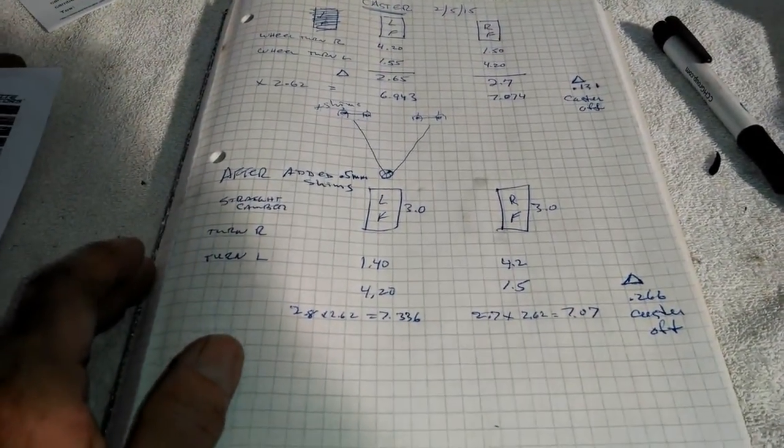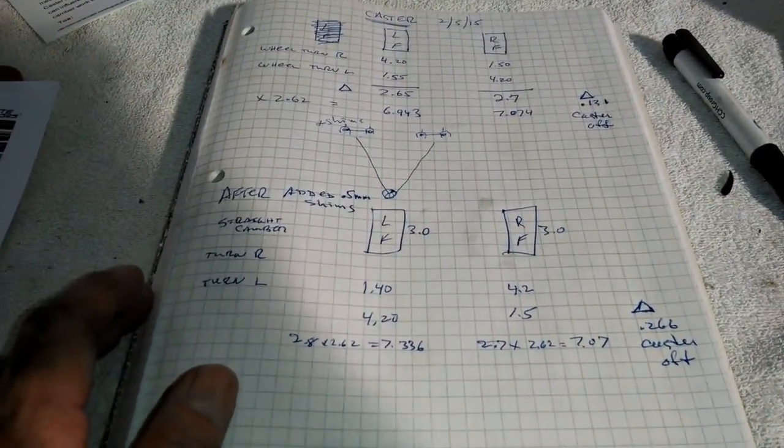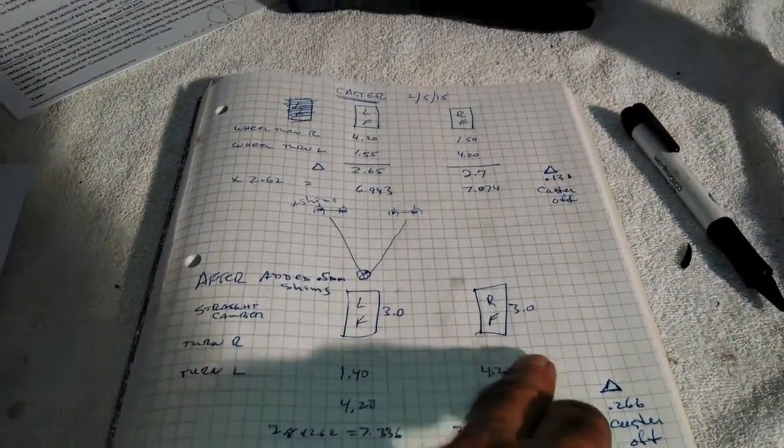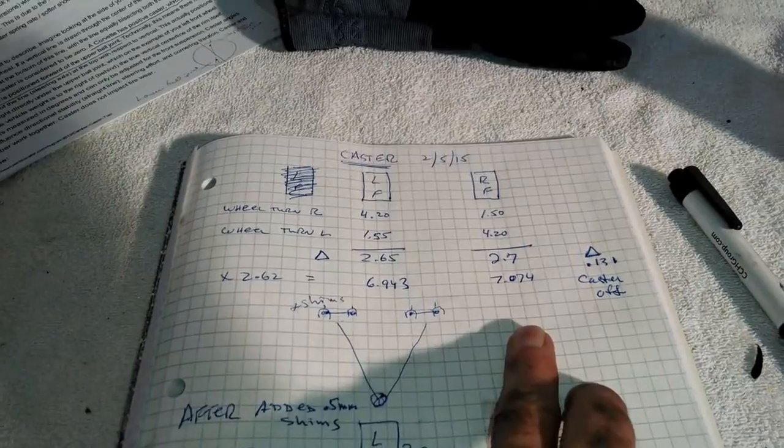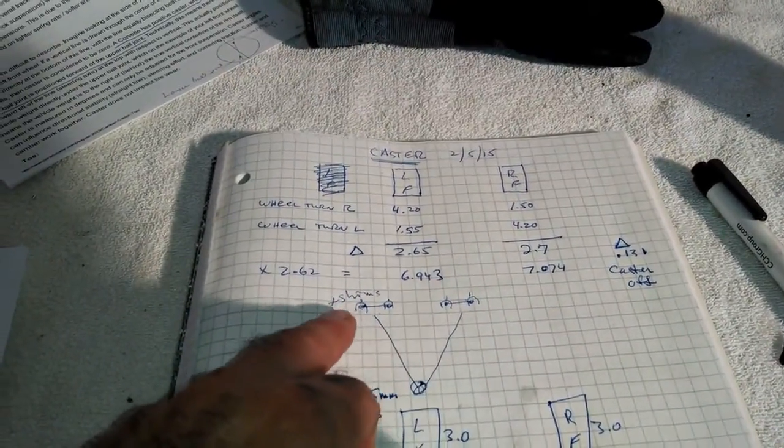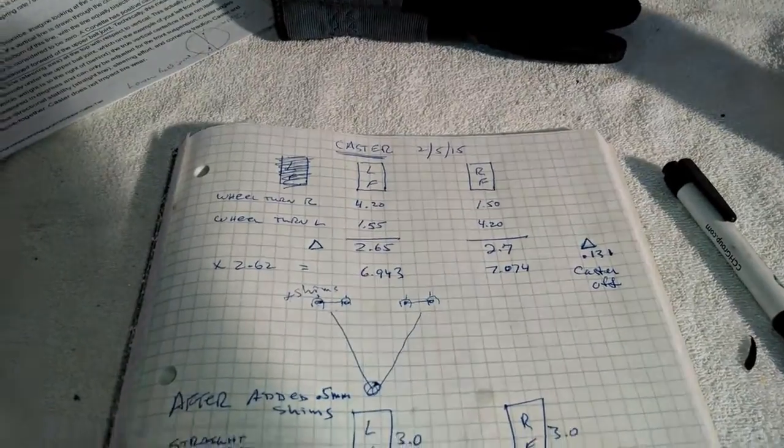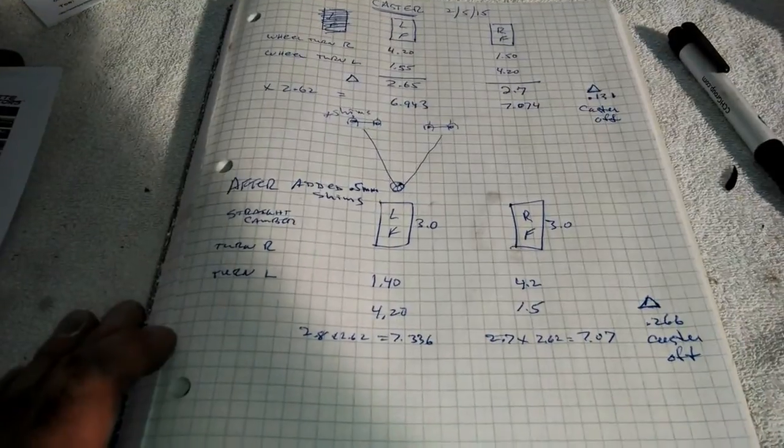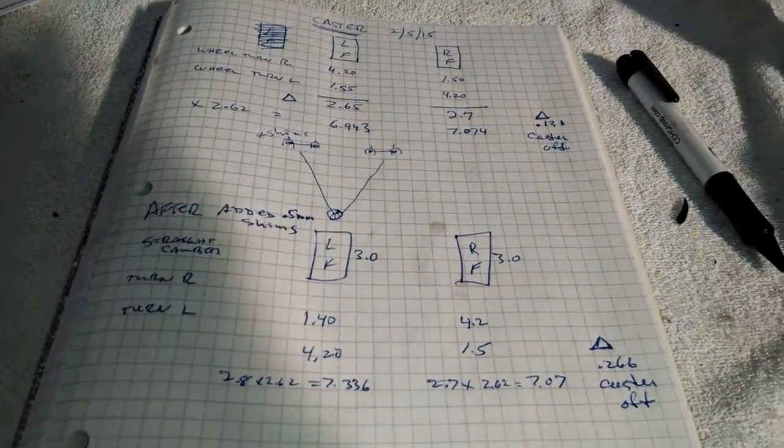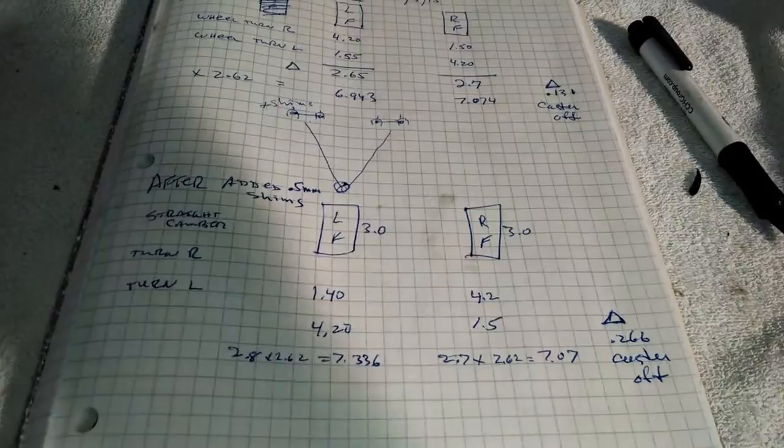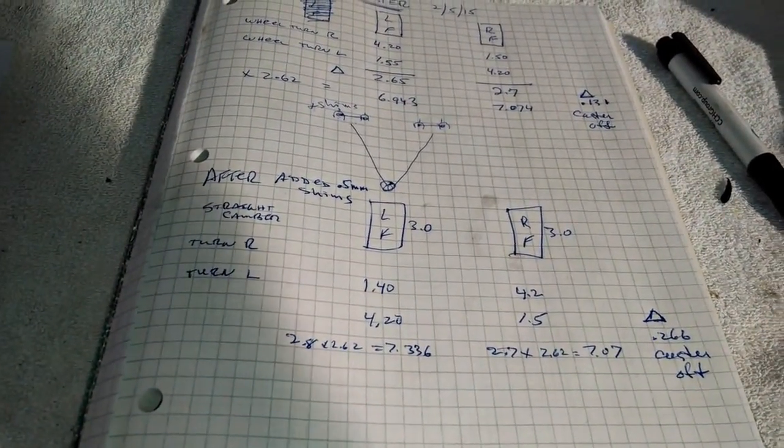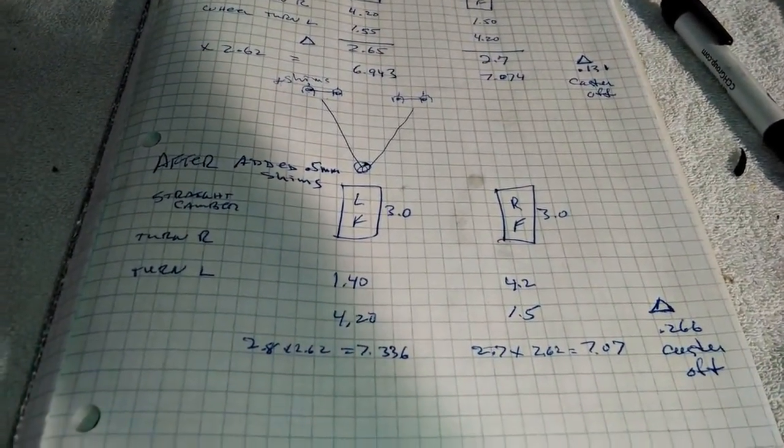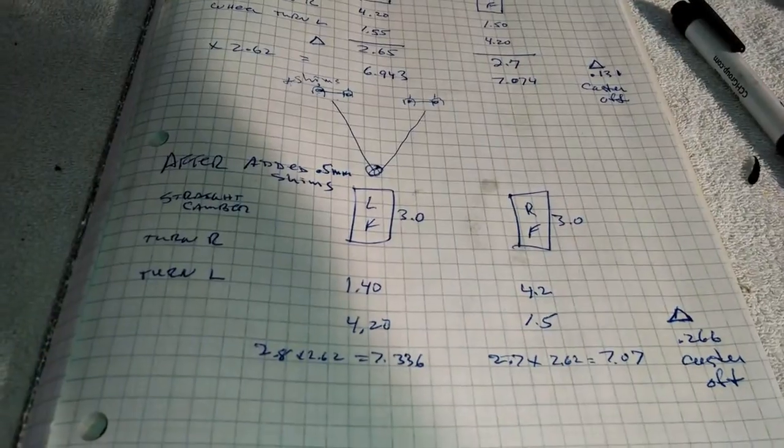Anyway, right now I've got the left front at 7.336. The right front didn't change at all. It was just an insignificant change, within the margin of error of measuring. And I got 7.07. The old one was 7.074. We're really talking about tiny fractions of fractions. So before the caster was off 0.13, which it wasn't really off. I didn't really care, but I just wanted to do this experiment to see how caster moves around and how you change it.